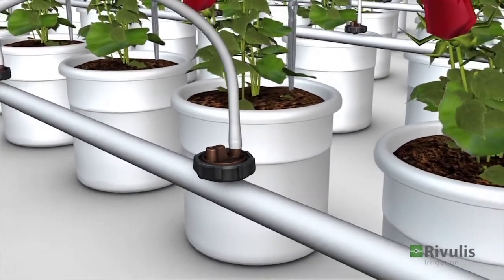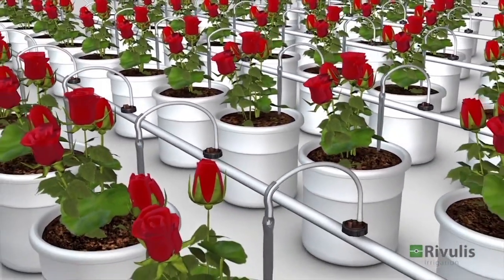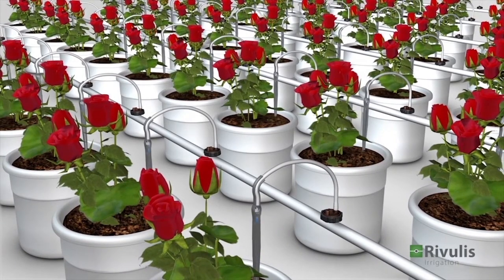Another useful application is a single dripper with a micro tube and a stabilizing peg inserted into the plant pot. e1000, the reliable irrigation choice.